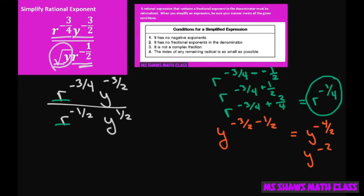So what we have, once we just simplify that and group our y's and r's together, is we have r to the negative one-fourth y to the negative two.